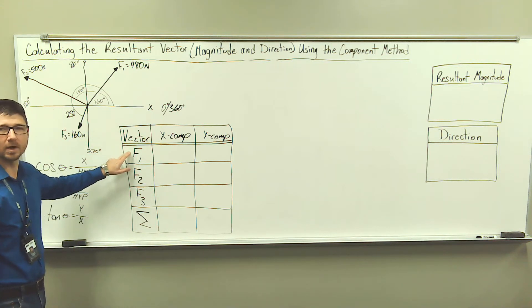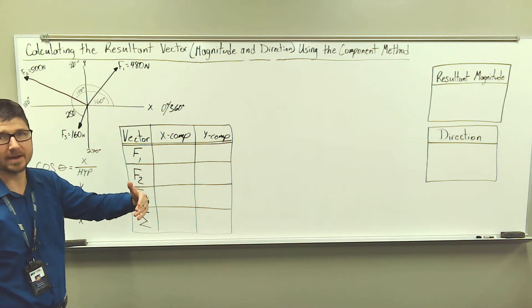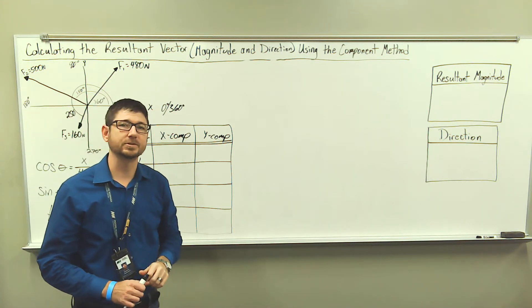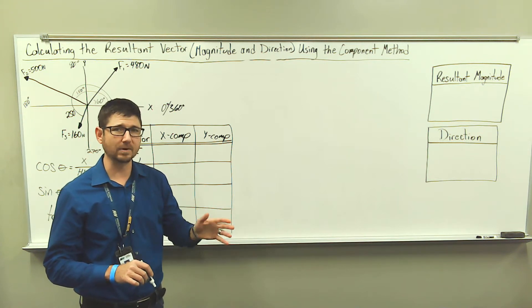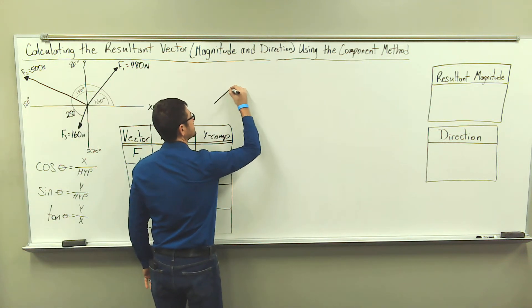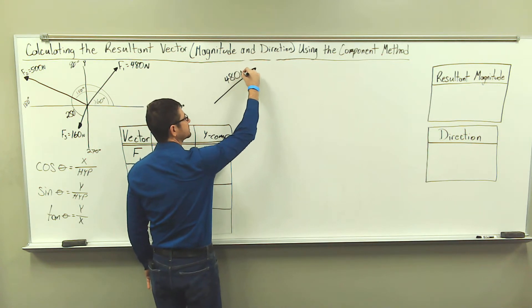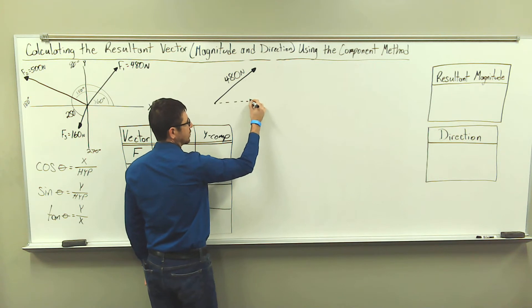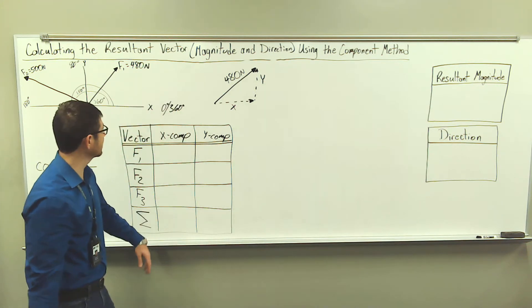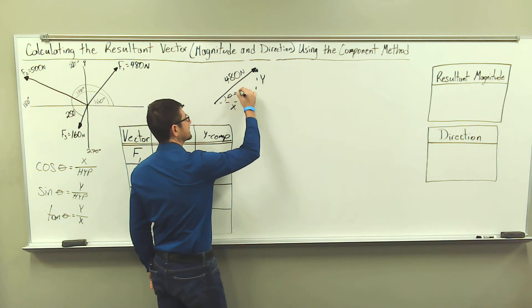For force one, we're going to break that down into its x and y components. We're first going to redraw the triangle. Remember, we're always going to use the reference angle — we reference the closest x-axis. The magnitude of force one is 480 newtons. We have an x component and a y component, and our reference angle is 60 degrees.